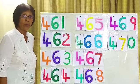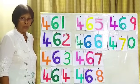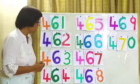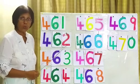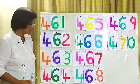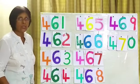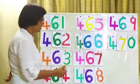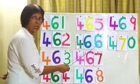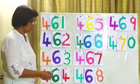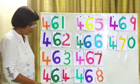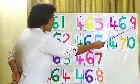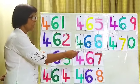Okay children, now we'll read from the beginning in order. Here the first number: 461, 462, 463, 464, 465, 466, 467, 468, 468, 468, 469, 470.